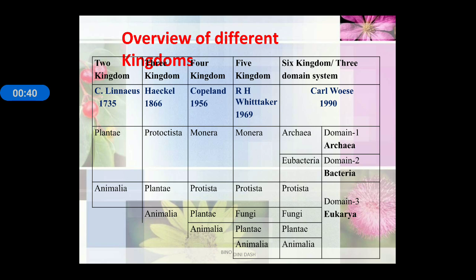The first system is two kingdom classification, proposed by Carlos Linnaeus, who proposed only two kingdoms: Plantae and Animalia. Later on, three kingdom classification was introduced by Haeckel, in which Plantae, Animalia, and Protista — the third one — was introduced.